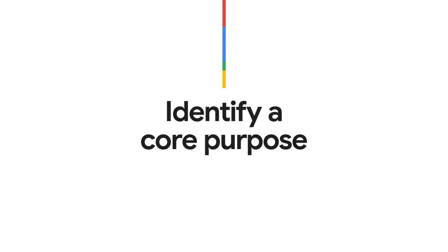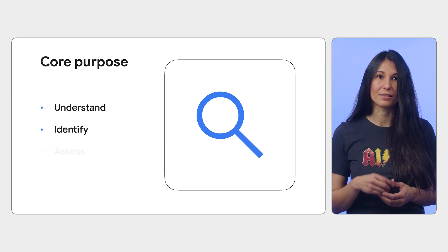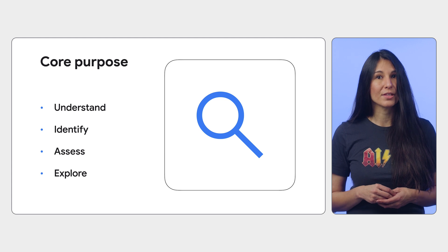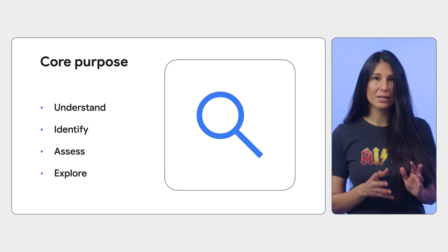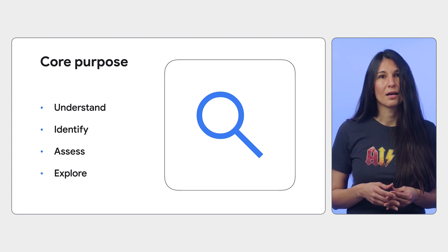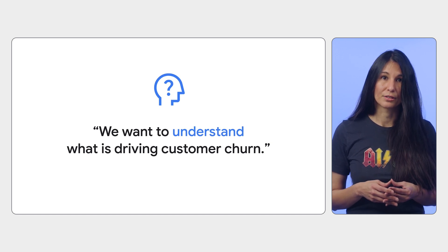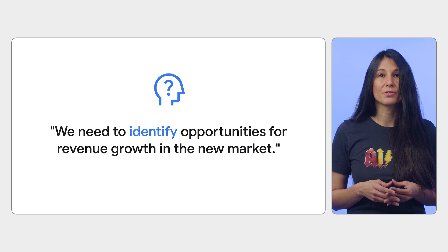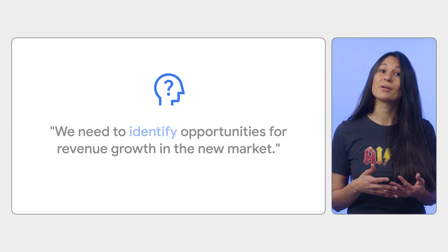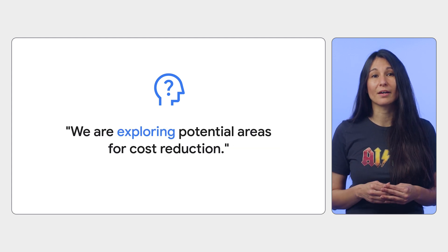To define the core purpose of your story, find the one guiding thread you want your audience to follow throughout the report. You can avoid biasing your analysis by framing the statement to understand, identify, assess, or explore your data. Some examples: we want to understand what factors are driving customer churn; we need to identify opportunities for revenue growth in a new market; our goal is to assess the effectiveness of a recent marketing campaign; or we're exploring potential areas for cost reduction.